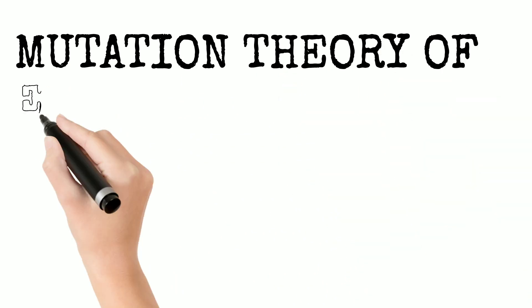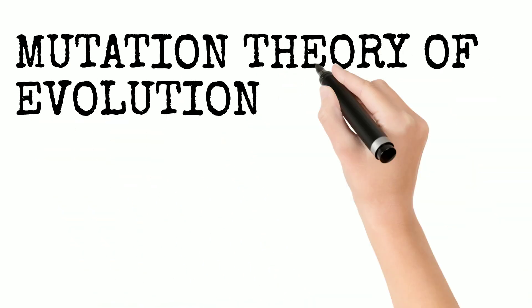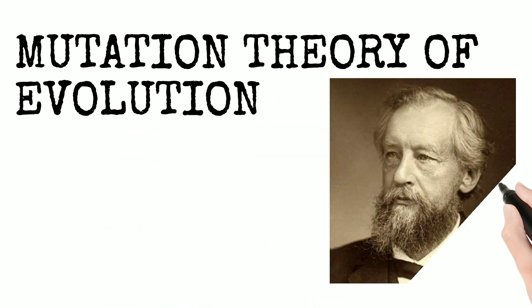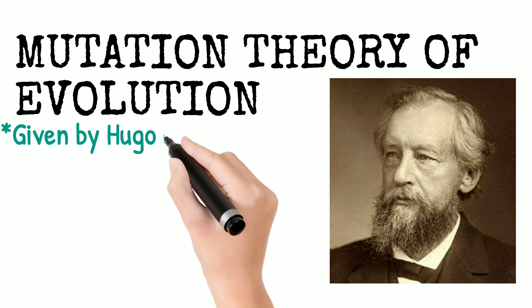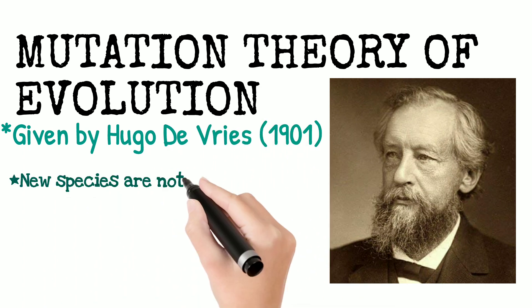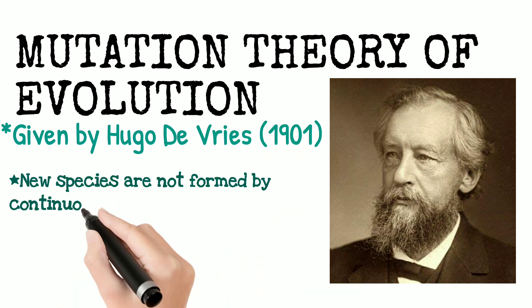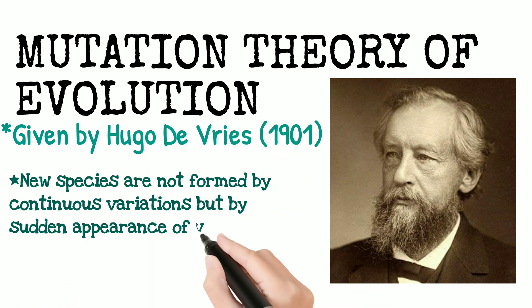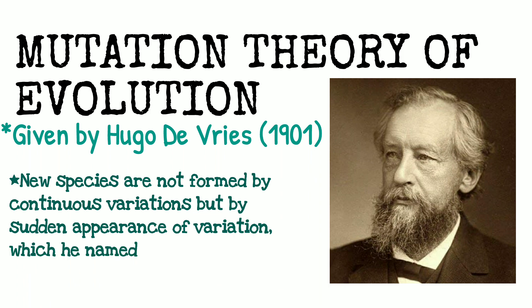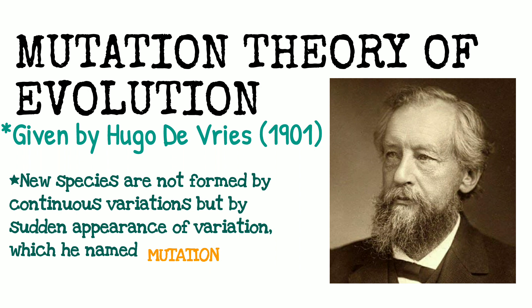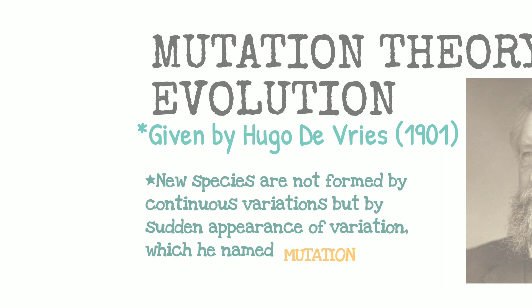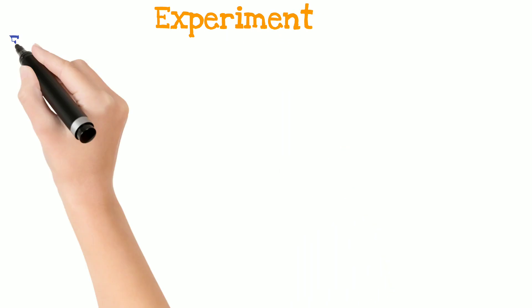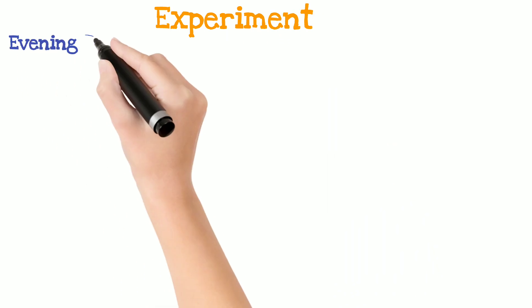Mutation Theory of Evolution, given by Hugo De Vries in 1901. This theory states that new species are not formed by continuous variation, but by sudden appearance of variation, which he named mutation. He conducted an experiment over about 50,000 species of evening primrose,